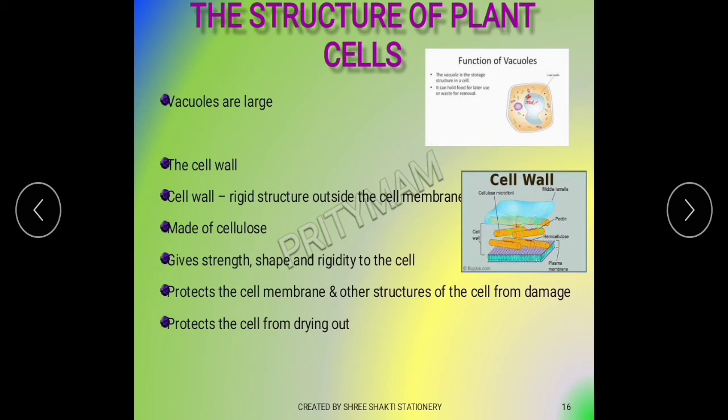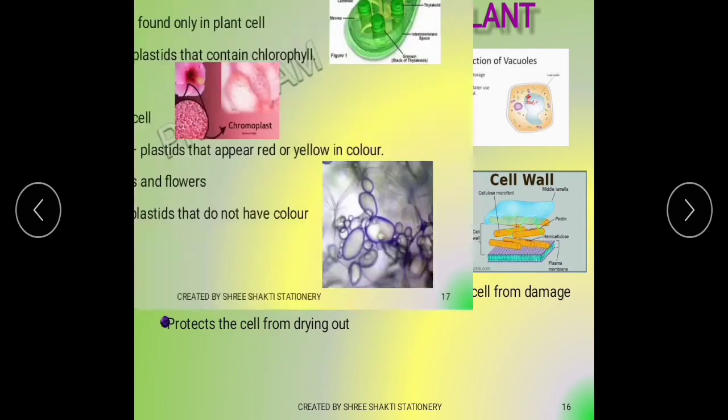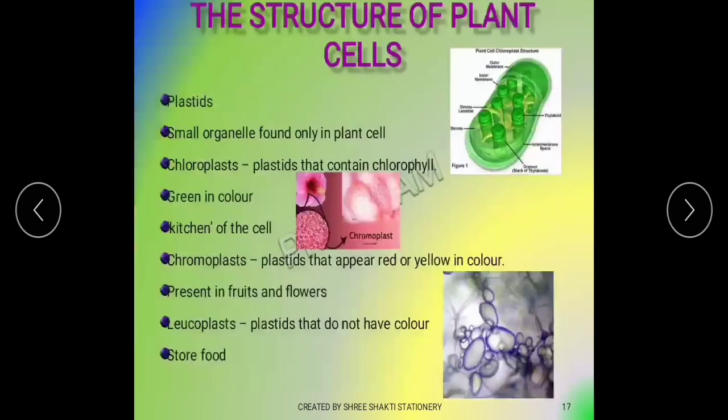Robert Hooke was the first person who observed a slice of cork under a microscope. Our plant cells that he observed can be very small organelles.